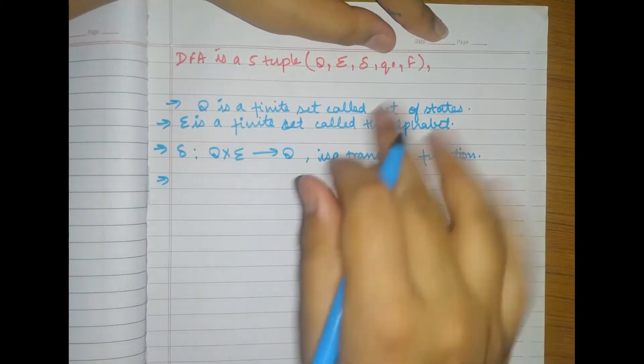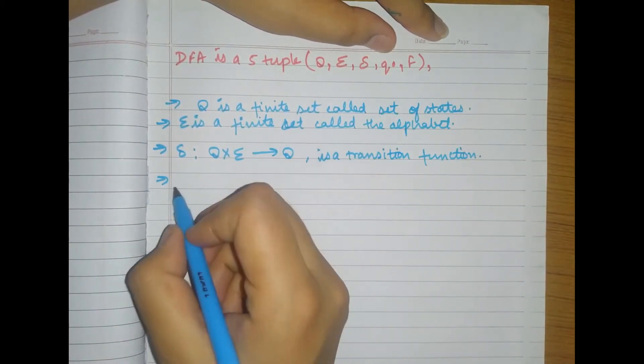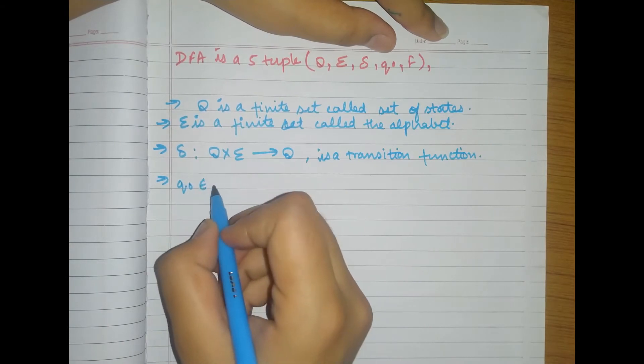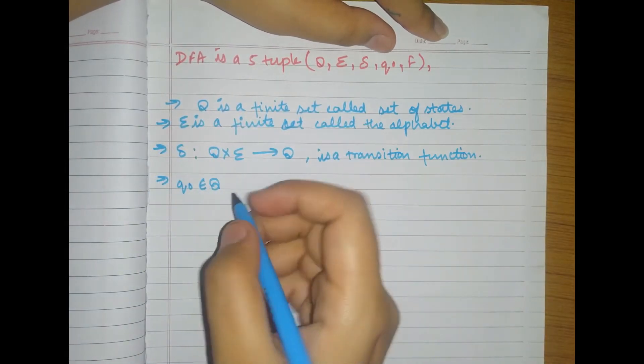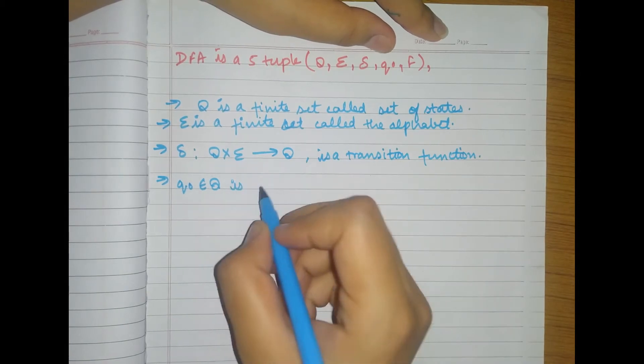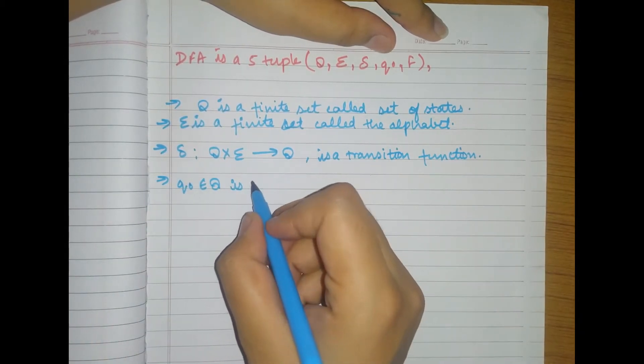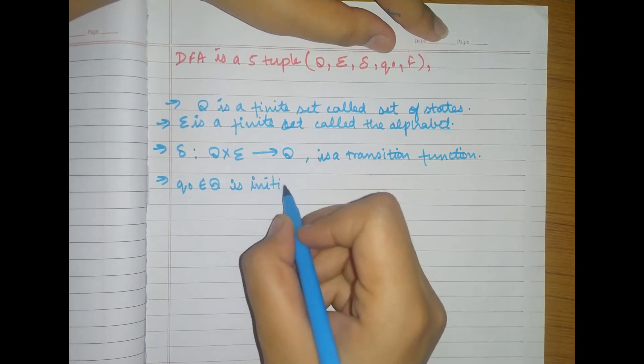Okay, what is this Q naught here? Q naught belongs to Q which is a finite set. And this is the initial state here.